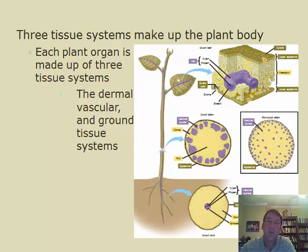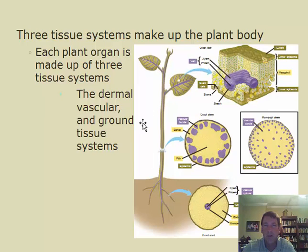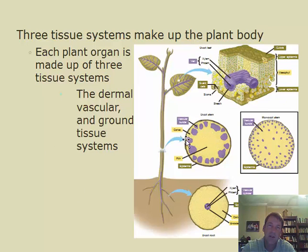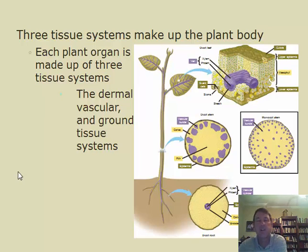The cells of the plant body make up three different tissue types: dermal, vascular, and ground. This is fewer tissue types than in animals. A diagram shows how all three tissue types are arranged in the three major parts of the plant body — stem, leaf, and root. Dermal tissue, like our skin, is the covering of the plant — the upper and lower epidermis of the leaf, and the outer layer of the stem and root.